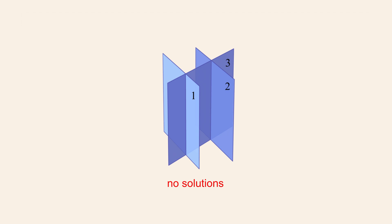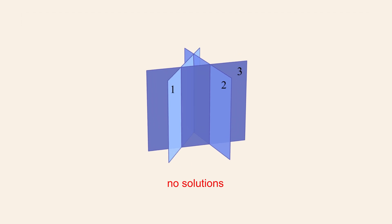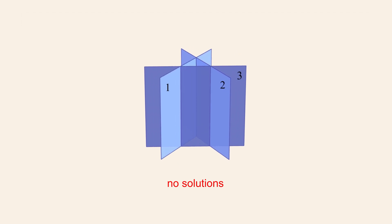One additional configuration of the planes which will result in a system with no solutions is if the planes are oriented so that their intersection points lie along three distinct parallel lines. Once again, since there are no points in common to all three planes, the system has no solutions.